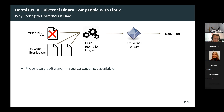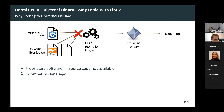First, if you have proprietary software, you just have a binary — you don't have the source code — so you won't be able to run this in most unikernel models today. You also have problems with incompatible languages. Say you want to run your application on top of Mirage, which is written mainly in OCaml and supports only OCaml. If your application is written in C++, it's just not going to work.